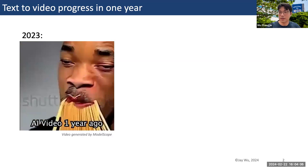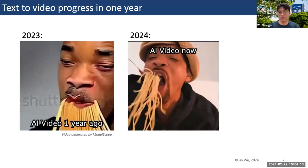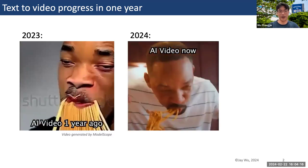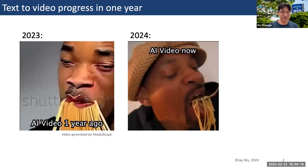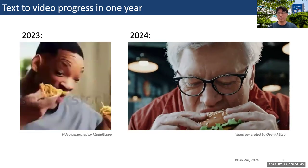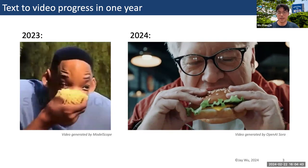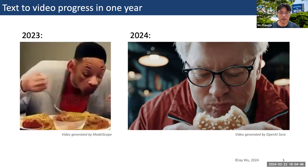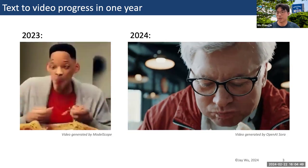And now this year, text-to-video generation has already progressed really fast. But actually, the current video is not a generative video — it was shot by the real Will Smith himself. Recently, the OpenAI team released a really impressive model called Sora, which has achieved very amazing performance on text-conditioned video generation.